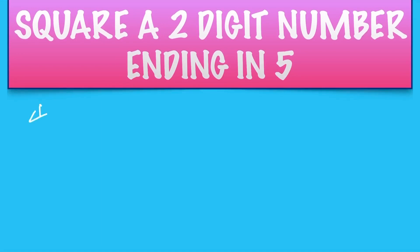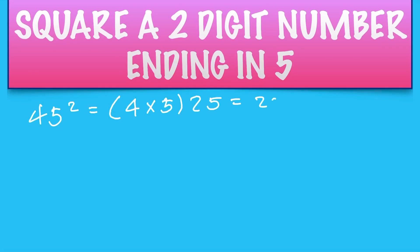So if we take 45 squared, all you do is you take the 4 times where the next number is 5 and put a 25 on the end. So that is 2025.